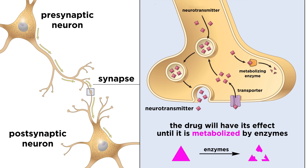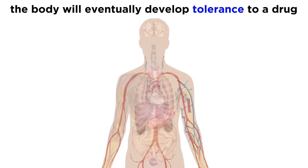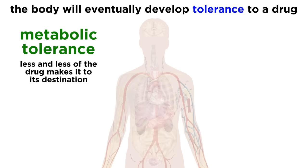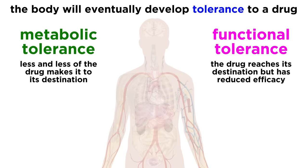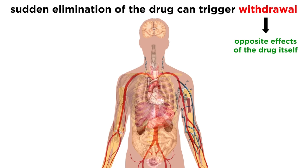Whatever the case may be, the drug will continue to have its particular effect until it is metabolized by enzymes, which essentially chop them up until they can no longer perform any function. The body will respond to the presence or absence of a drug differently over time. If exposed to a particular drug regularly, a tolerance can be developed. This is a decreased sensitivity to the drug, either in the way of metabolic tolerance, where less and less of the drug makes it to its destination, or functional tolerance, where the drug makes it to where it's going but its efficacy diminishes, often because receptors undergo endocytosis. If the body grows accustomed to a drug, its sudden elimination can trigger symptoms of withdrawal. These tend to be the opposite of the effects of the drug, and if withdrawal is experienced, it means a physical dependency has developed.